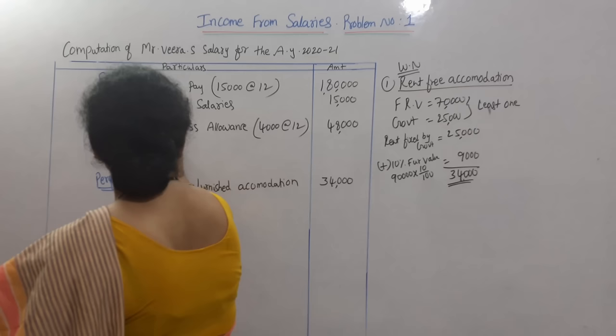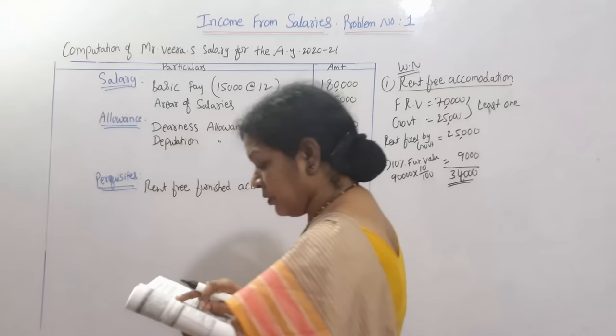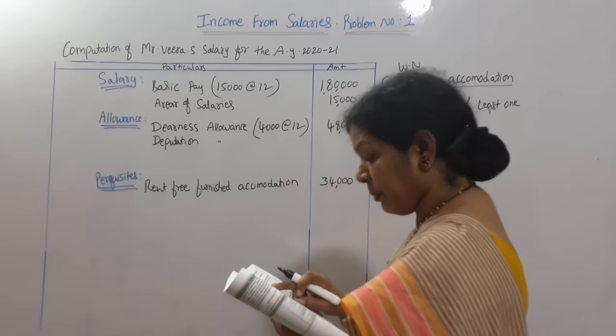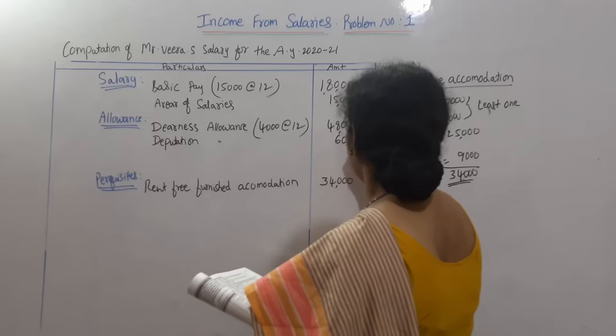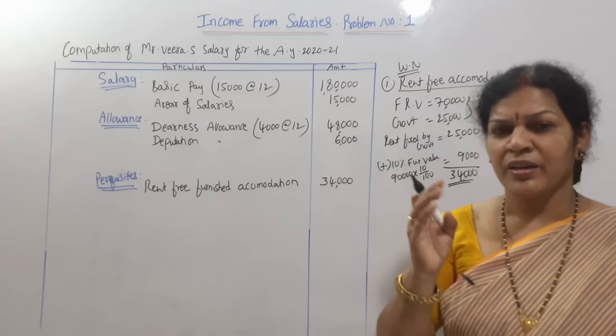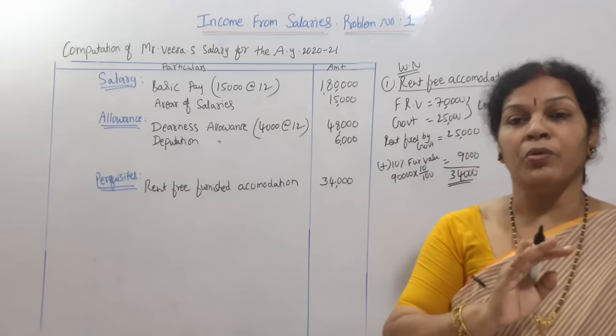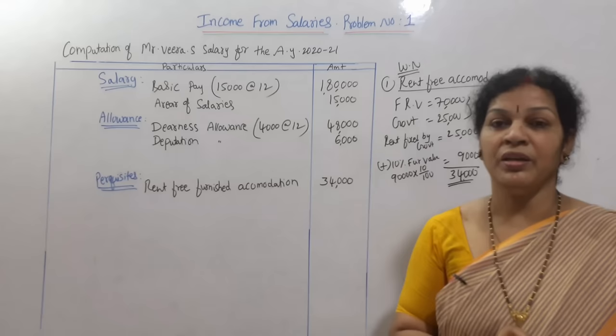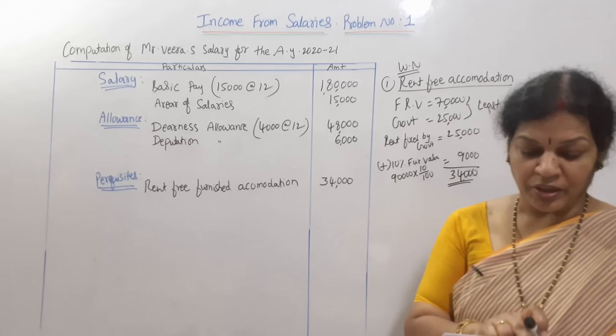Next, deputation allowance comes under allowances. Deputation allowance is ₹6,000 per annum — given per annum so we take it directly. If it were per month we would multiply by 12. Deputation allowance is done. Own contribution to State Provident Fund — both own and employer contributions are exempted; we don't consider them in the calculation of income from salaries.